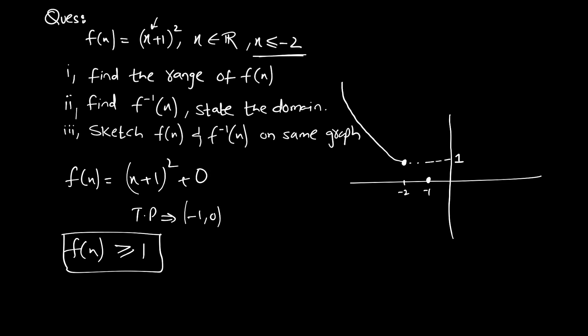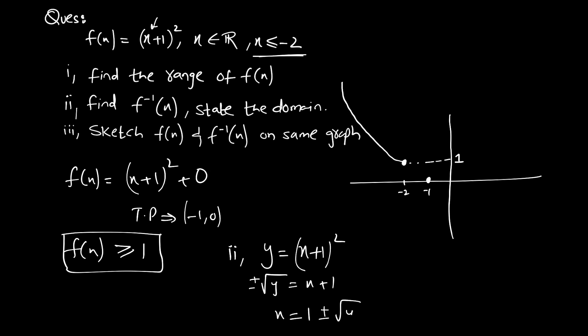In the second part, find f⁻¹ and state its domain. To find f⁻¹, replace f(x) with y and make x the subject: x = −1 ± √y. Since the domain of the function is x ≤ −2, the range of the inverse must be ≤ −2. Therefore f⁻¹(x) = 1 − √x.